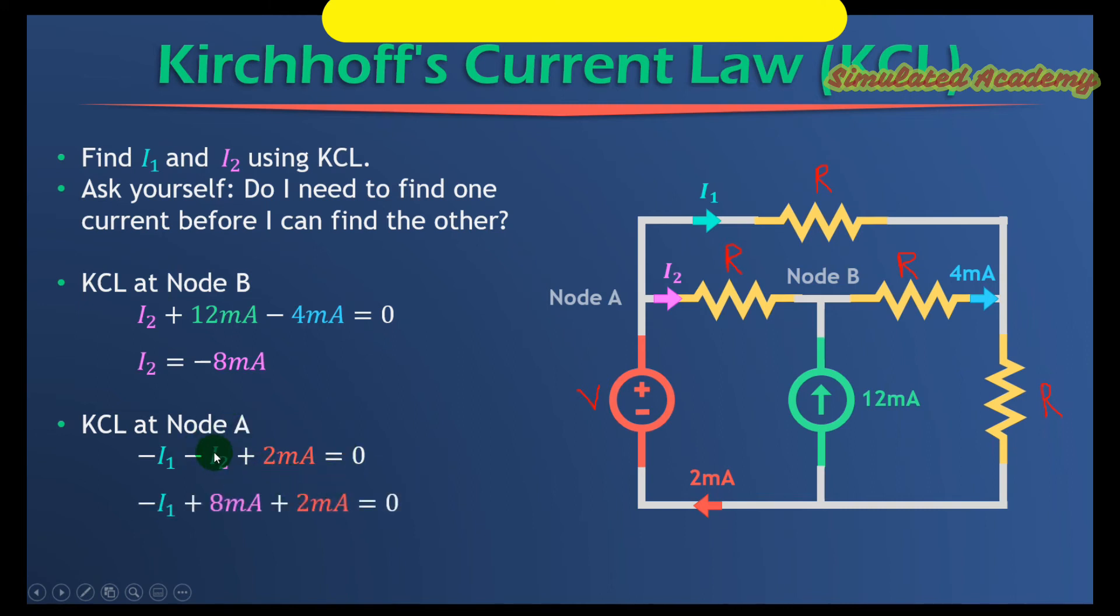Put the value of I2, that is minus 8 mA. So this minus and this minus will become plus, and you will get plus 8 mA. Solve for I1, you will get 10 mA.